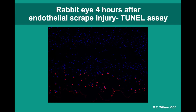Carla Medros did an experiment where we injured the endothelium of rabbits — experiments done 30 years apart. I always suspected the endothelium would do the same thing. We finally got around to it by injuring the endothelium with a smooth tip cannula rubbing on it, and four hours later you see apoptosis in the posterior cornea by the same mechanisms from the endothelial side.